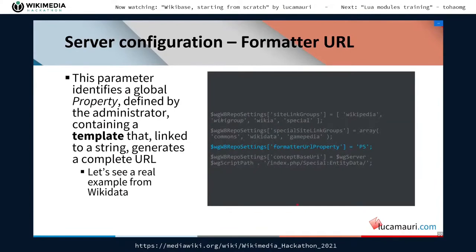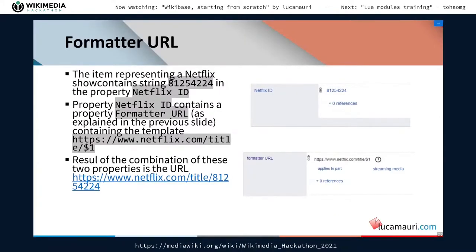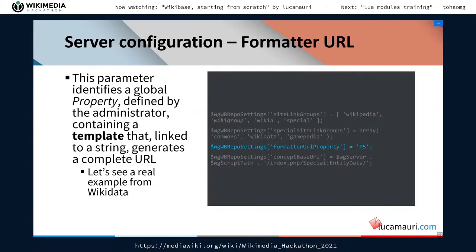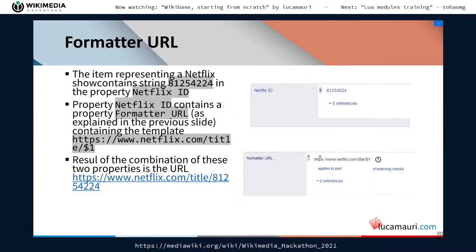Another very interesting configuration is the formatted URL. The formatted URL is a parameter that identifies a property that can be used as a template to construct URLs. For example, Wikidata has a Netflix ID property containing a string. This Netflix property contains the formatted URL defined in the server configuration file, and that formatted URL contains a string with a placeholder. The combination of the formatted URL and the data creates a URL to go directly — when you click, you don't see the full URL but it is constructed behind the scenes.